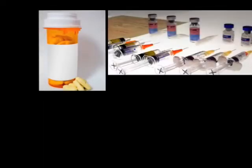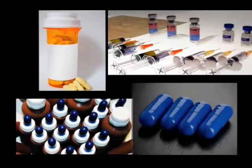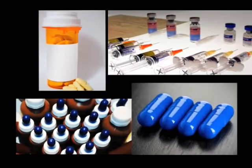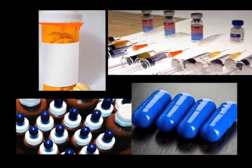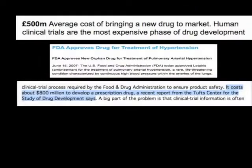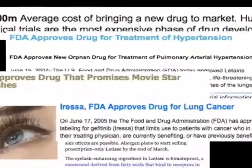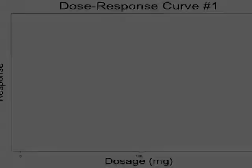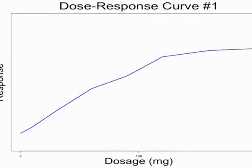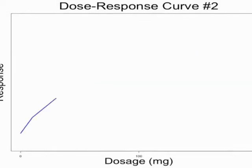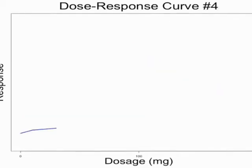Any experimental drug seeking entrance to the consumer market must be approved by the FDA through a clinical drug trial. Billions of dollars are spent each year on these clinical drug trials, which typically last several years. One objective of a clinical trial is to estimate the dose-response curve, a curve which describes patients' responses to the drug at different dosage levels.